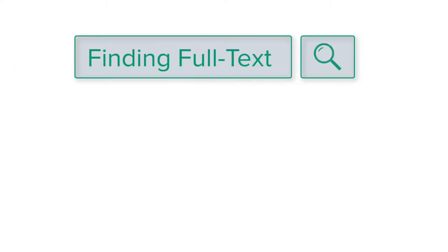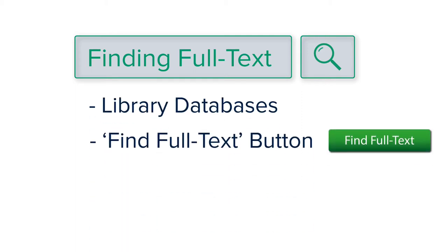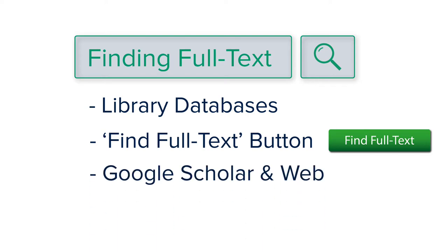In this video, we'll cover how to find full text, primarily in journal articles. We can get full text directly from the library databases, use the Find Full Text button, use Google Scholar and Google Web, and know a little bit about the quirks of search systems.